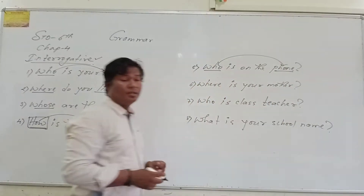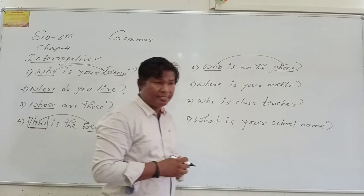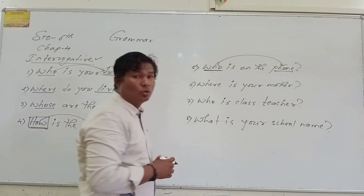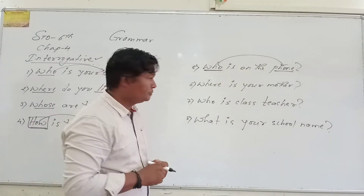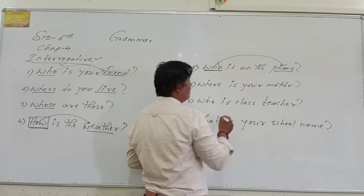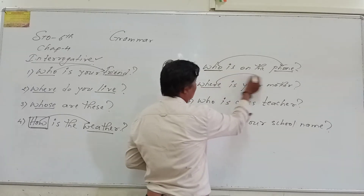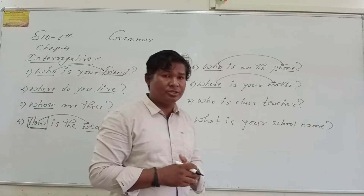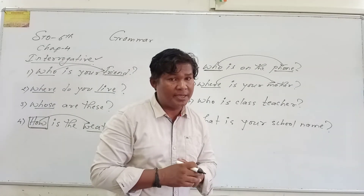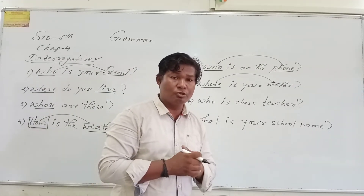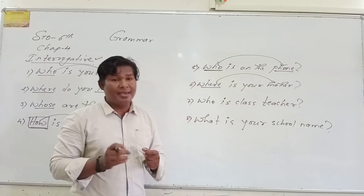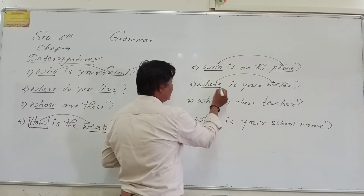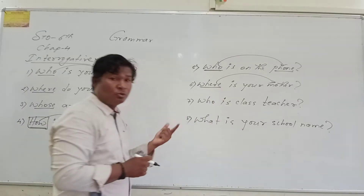That means we are asking about the noun. For example: 'Where is your mother?' — here we are asking about a place. The answer would be 'My mother is in the school.' The school here is a noun, so 'where' is used as a pronoun in place of 'the school.'